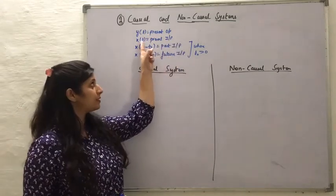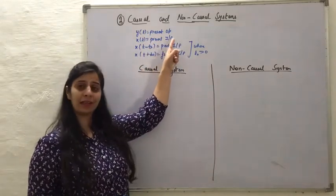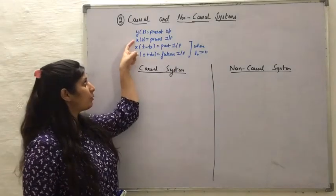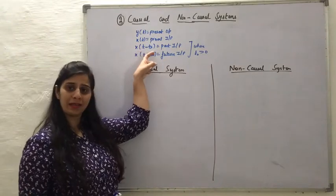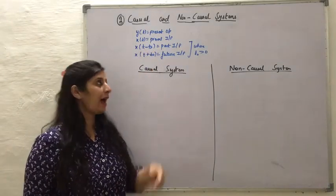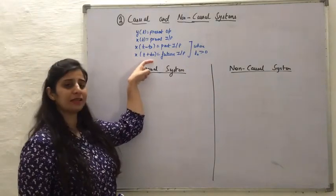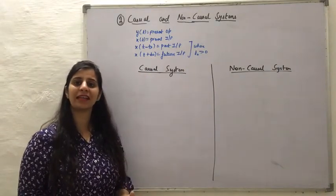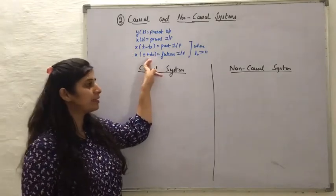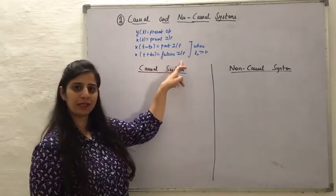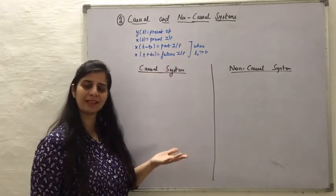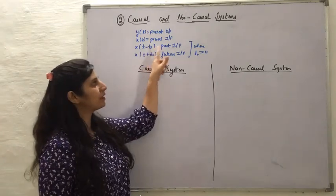x(t) will denote the present input. From the time shifting operations we remember: when x(t) was transformed to x(t - t₀), this operation was leading to time delay; and when x(t) was transformed to x(t + t₀), this was giving us a time advanced signal. Since it was a time advanced signal, this represents a future input signal, and x(t - t₀) which gives time delay represents a past input.